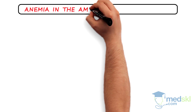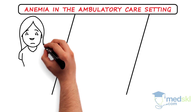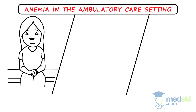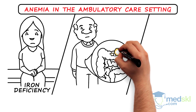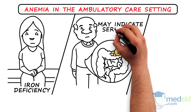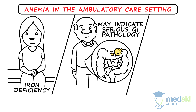Anemia in the ambulatory care setting may be chronic, and patients may remain asymptomatic for some time. In young menstruating women, iron deficiency is an extremely common cause of anemia. In the elderly, iron deficiency anemia may indicate serious GI pathology, which must be further investigated.